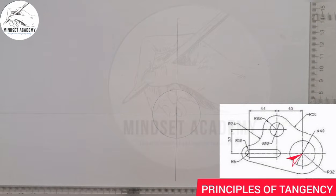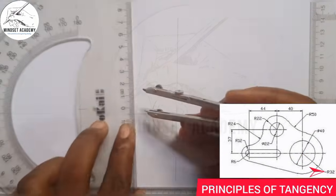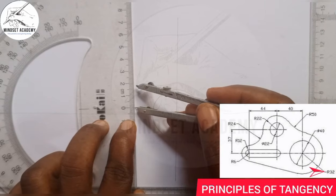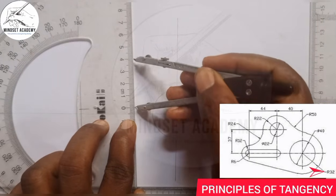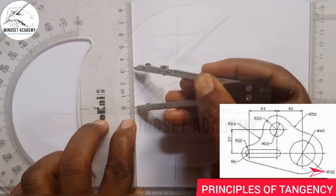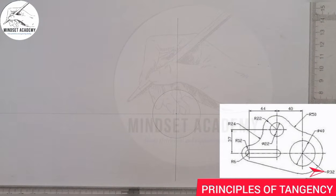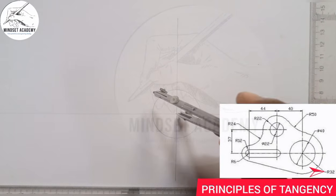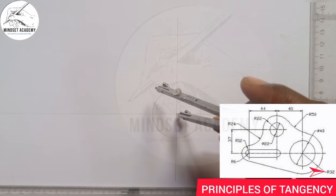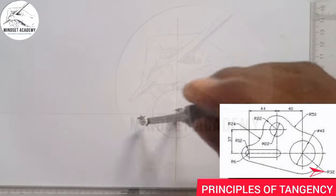The other circle has a radius of 32, so I'm going to measure 32 — from 0 to 30, 31, 32. Since it is not complete, I'll use a faint line and draw a circle there.